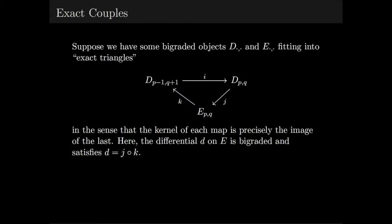Suppose we have some bigraded objects D and E fitting into exact triangles, as shown below, in the sense that the kernel of each map is precisely the image of the last. Here the differential D on E is bigraded and satisfies D equals J of K. Even though there are three entries in the diagram, the map I will usually be an inclusion between different filtration levels, so we call this an exact couple.